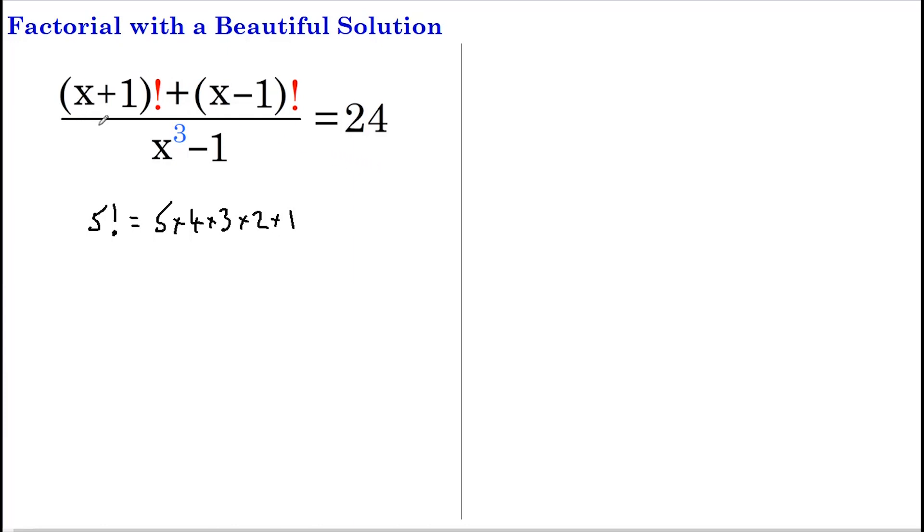Let's start with this term, (x+1) factorial. Another way of writing this is to say it equals (x+1), which is the first term, multiplied by x, which is the second term, multiplied by (x-1) factorial.